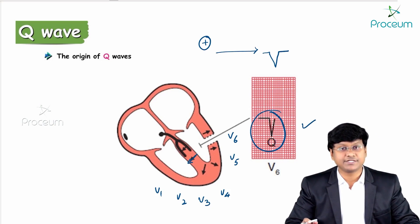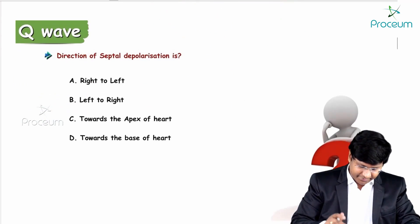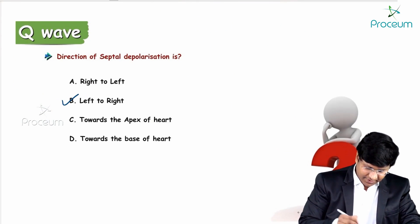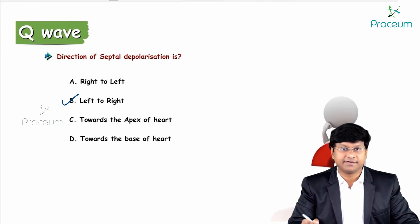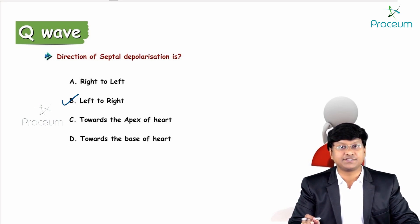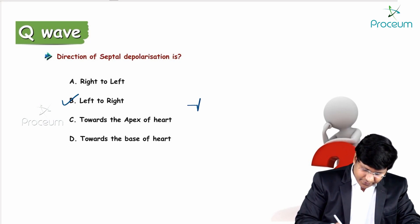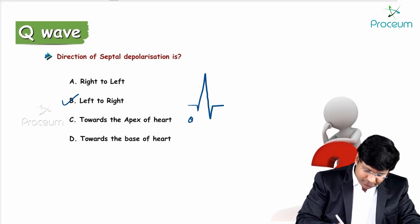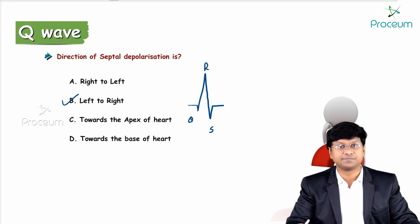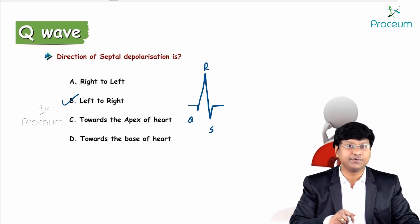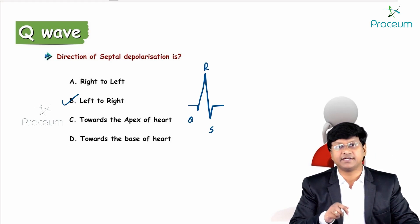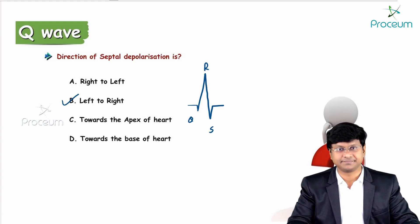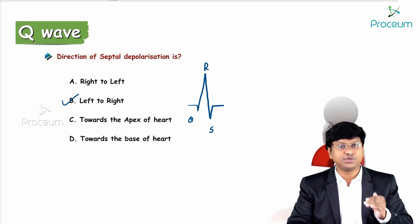The direction of septal depolarization is from left to right. The Q wave is a negative deflection that precedes the R wave. After the Q wave you will have the R wave, then the S wave — Q, R, and S. The Q wave represents the normal left-to-right depolarization of the interventricular septum.